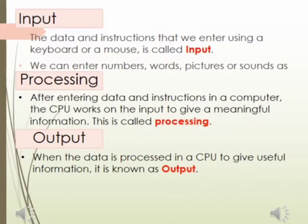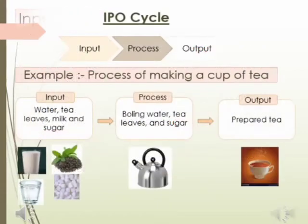What is output? When the data is processed in a computer CPU to give useful information, it is known as output. That is, after processing, the result that we get is known as the output. This input, process, output cycle is also known as IPO cycle.